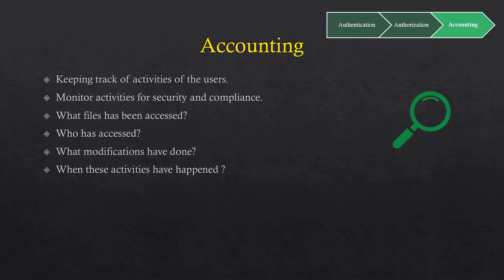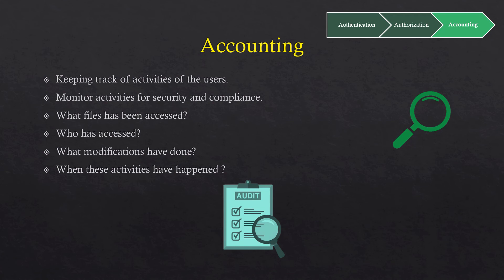The last A in the AAA model is accounting, which is keeping track of and monitoring what users do while they are logged into a system. Keeping track of users and their actions is very important for the purpose of security and compliance. For example, by tracing back to events, we can say a particular user accessed this system at a specific date and time and did these activities. So in a cybersecurity incident, this proof is available and will be very valuable to the investigation.